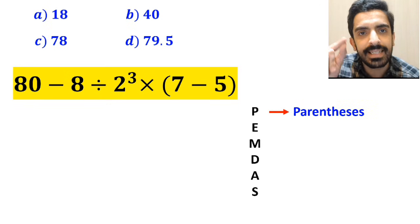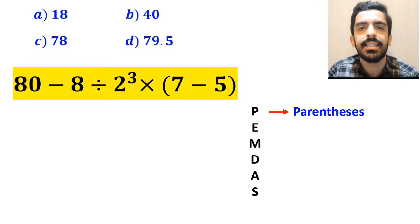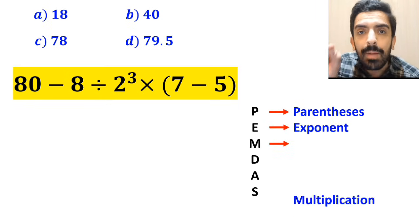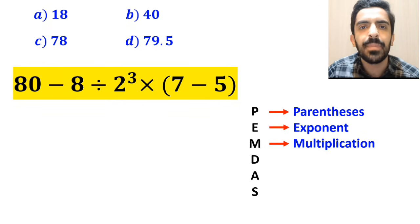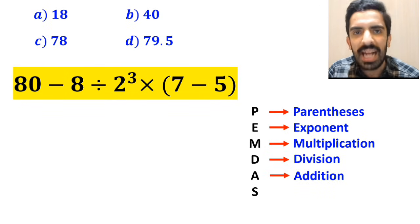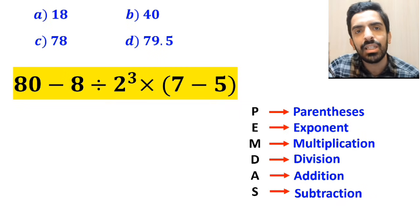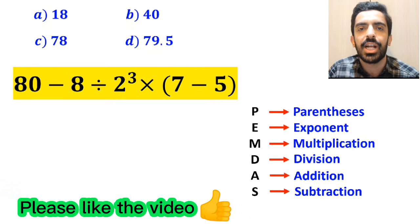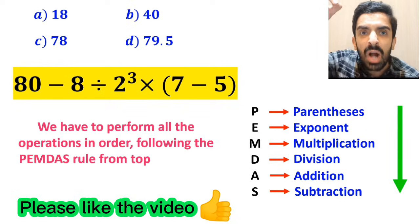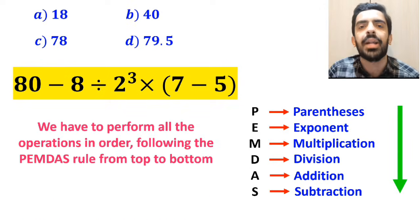In the PEMDAS rule, P stands for parenthesis, E stands for exponent, M stands for multiplication, D stands for division, A stands for addition, and S stands for subtraction. It means that we have to perform all the operations in order following the PEMDAS rule from top to bottom.